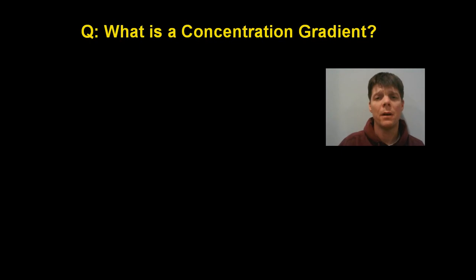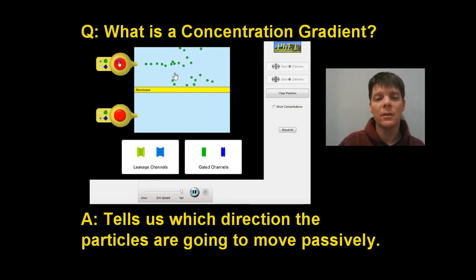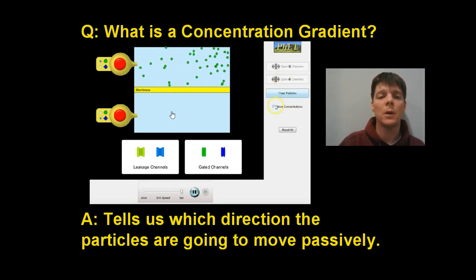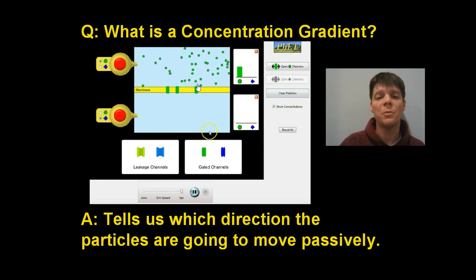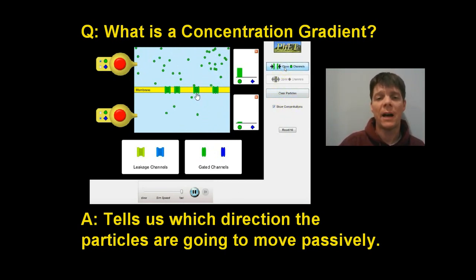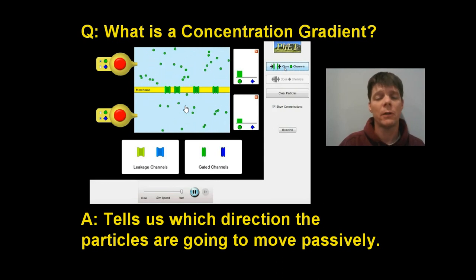Now we want to talk about this concept of a concentration gradient. A concentration gradient simply tells us the direction of movement for passive transport — where the particle is going to go. We're setting up a high concentration of particles above the membrane, outside of the cell, and below the membrane we have a low concentration of these green particles. The concentration gradient says that these particles are going to move passively, meaning the cell doesn't need to use any energy. It just has to have the correct channel proteins in place. The particles will move from where they are highly concentrated to where they are less concentrated. This is passive transport — it does not require any energy.